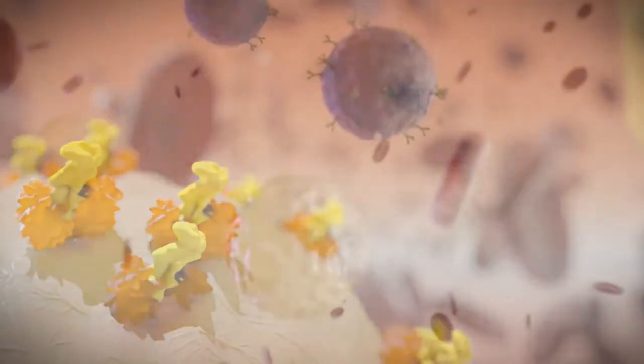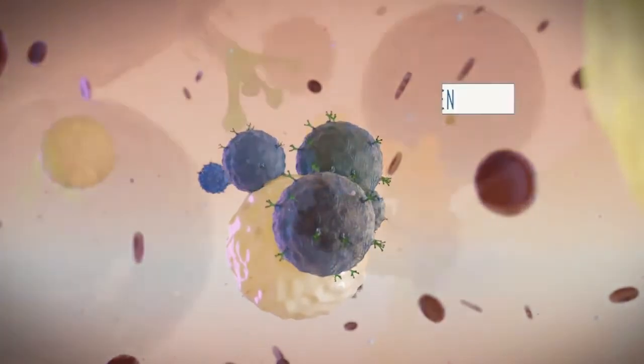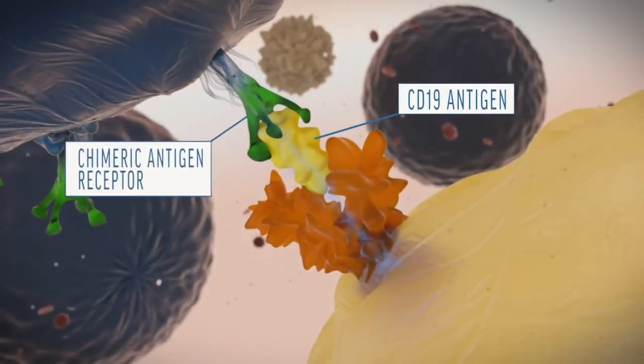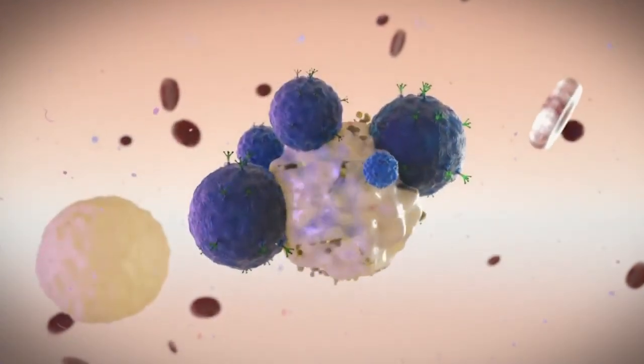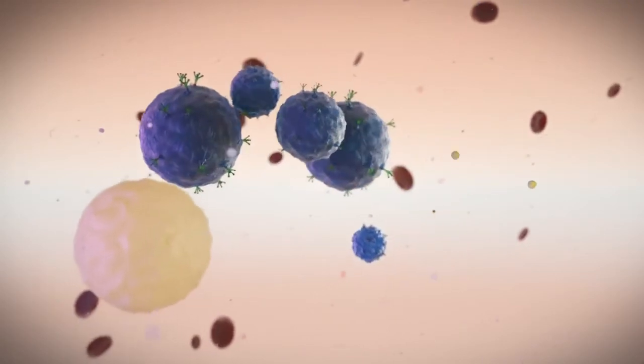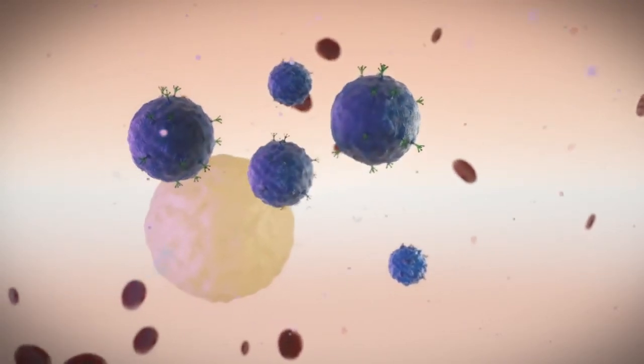Once in the bloodstream, those CAR T-cells home in on that antigen and grab hold. They release toxic chemicals that trigger a cancer cell's death. As one cancer cell dies, CAR T-cells move on to the next, multiplying in the patient's blood until they're no longer needed.